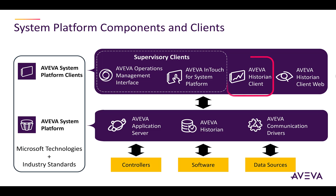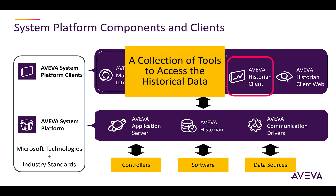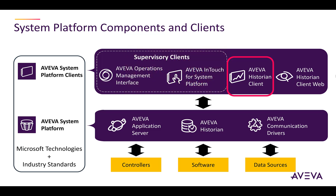Next is the Aviva Historian Client. The client contains a collection of tools to access the historical data in the Historian. It includes a feature-rich trend application, a query application that allows the construction of SQL queries through a point-and-click interface, and report generation through add-ons from Microsoft Excel and Word. Finally, there is Aviva Historian Client Web.